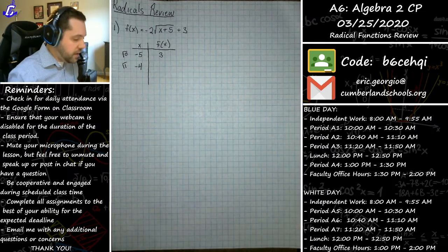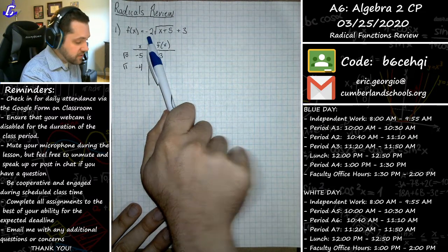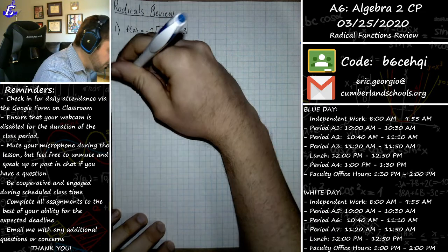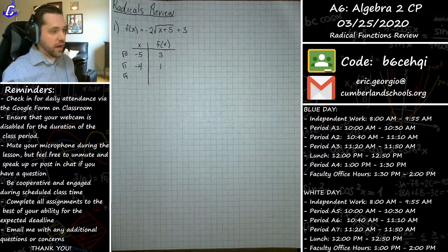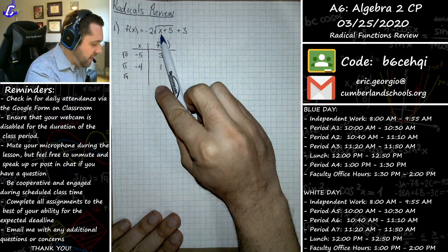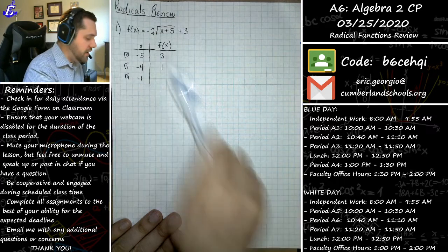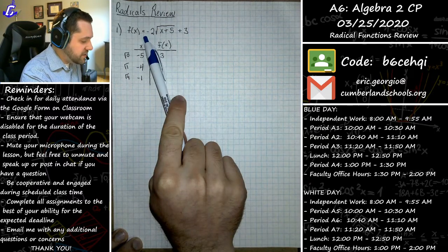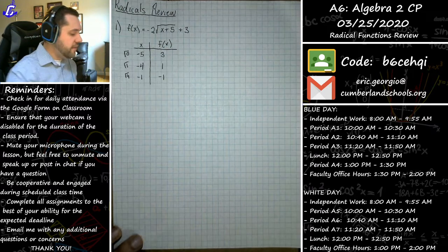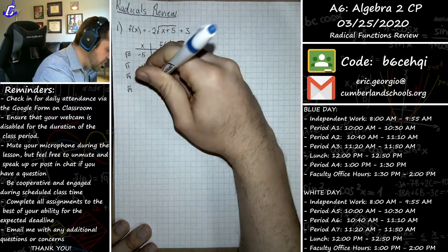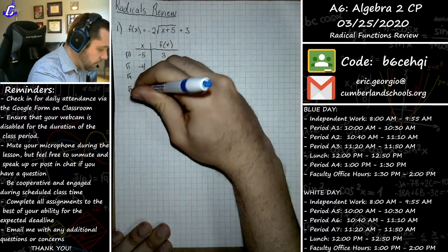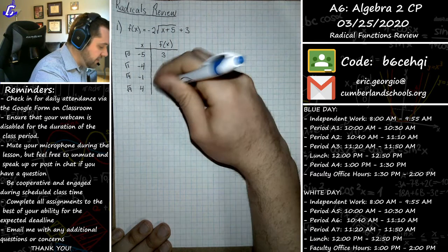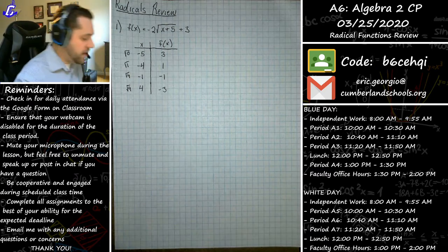Next I want the square root of one — negative four works because negative four plus five is one, the square root of one is one, times negative two is negative two, plus three is positive one. So our next point is (-4, 1). Then for the square root of four, plug in negative one: negative one plus five is four, square root of four is two, times negative two is negative four, plus three is negative one. For the square root of nine, plug in four: four plus five is nine, square root of nine is three, times negative two is negative six, plus three is negative three.